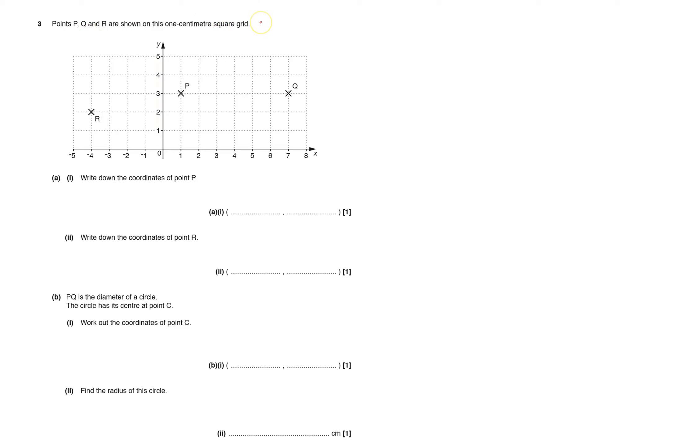P, Q, and R are shown on this one centimeter square grid. Write down the coordinates of P. It's always x-coordinate first, so it's one, three.